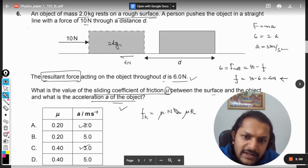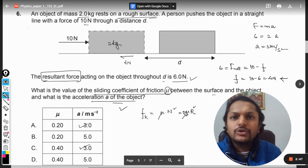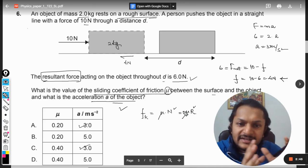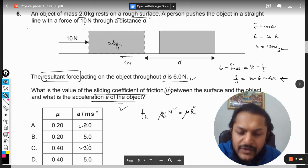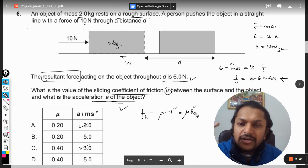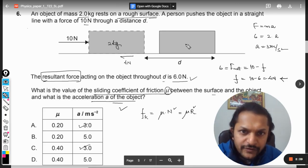Or μ into R. This is a normal reaction. Some books write it as N, some books write it as R, so I have given both of them. Now this N or R will be equal to the weight, that is the downward force you see.